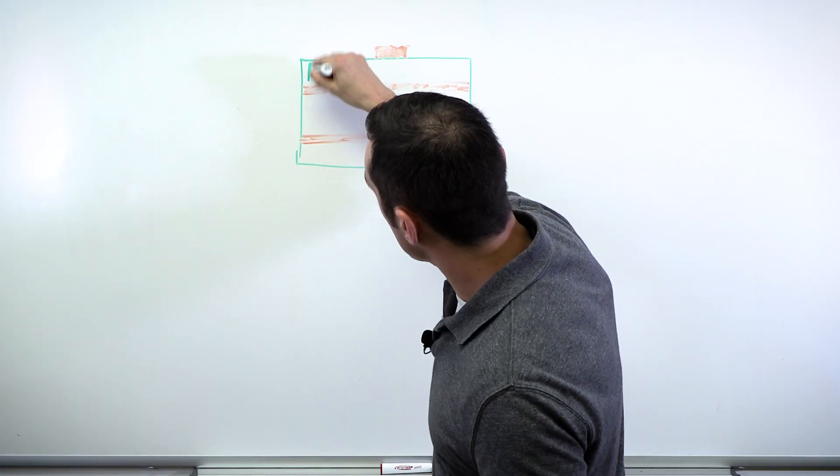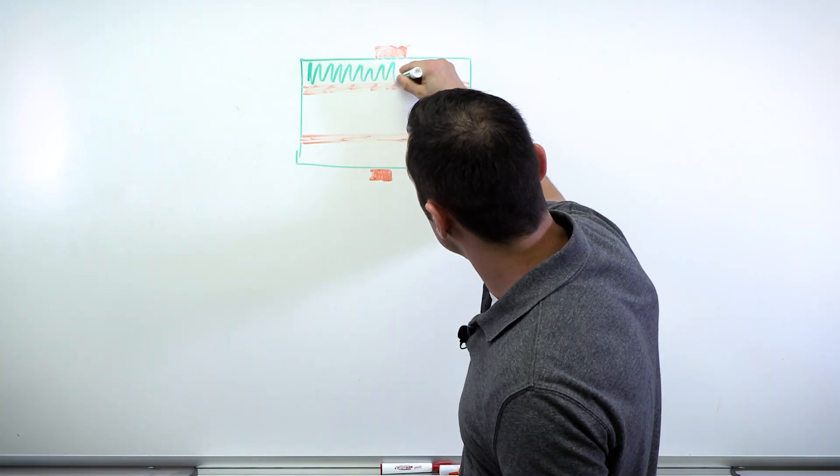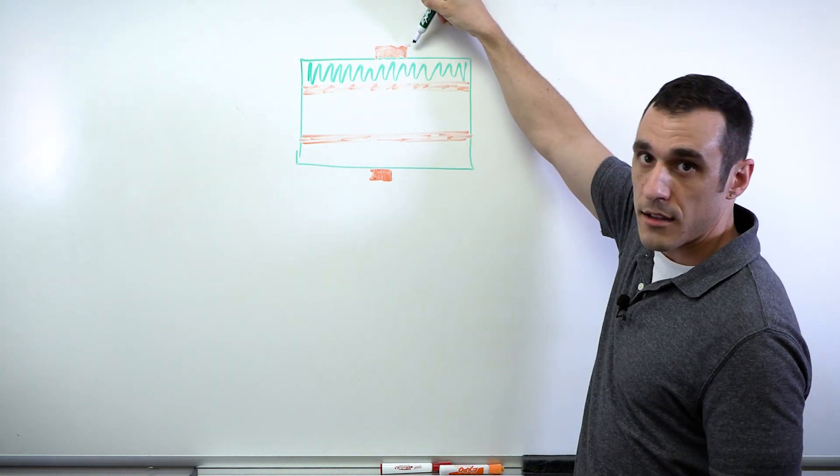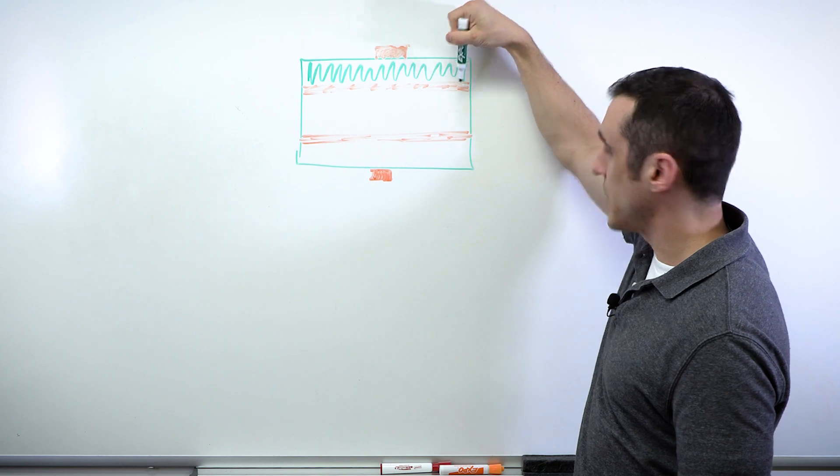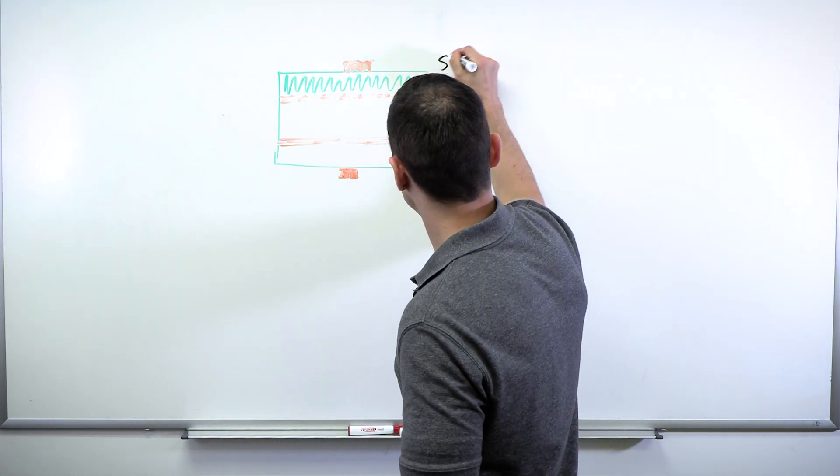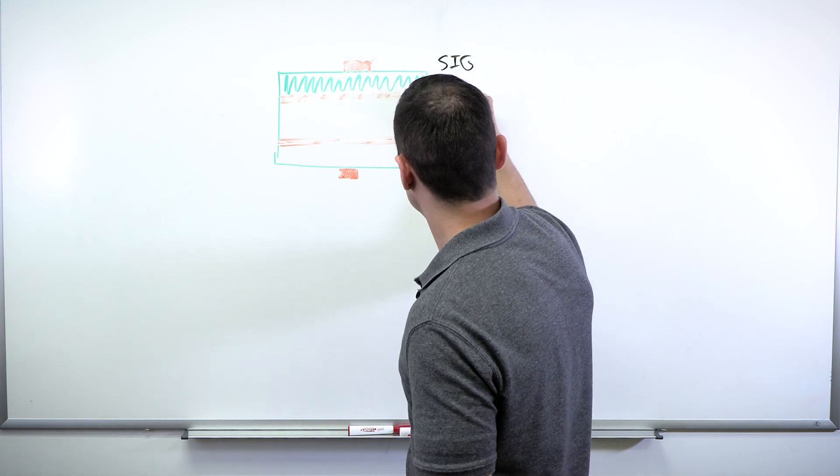Here on our top layer, we've got our dielectric in between our signal trace up on the top and a plane layer here underneath. So here I've got a signal and a plane layer.